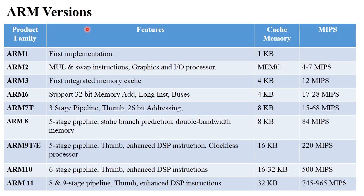The next point is ARM versions. ARM processor was developed step by step. It was first developed in 1983 as ARM 1 — this was the first implementation, and at that time the processor had features like only arithmetic operations. After ARM 1 came ARM 2, ARM 3, ARM 6, developed step by step. Each processor inherited features of the previous ARM processor and added new features. ARM 2 had just a few KB of memory, and had swap instruction and a graphics I/O processor, providing 4 to 7 million instructions per second (MIPS). ARM 3 added memory cache functionality, 4 KB cache, and achieved 12 million instructions per second.